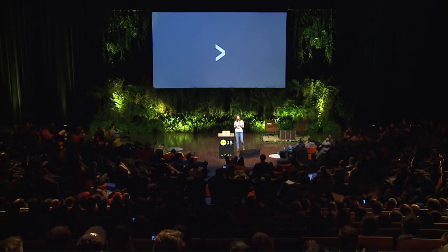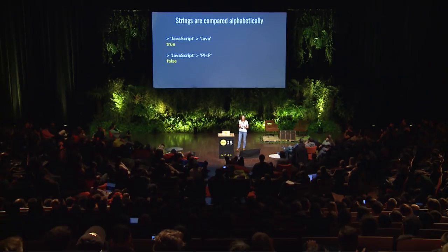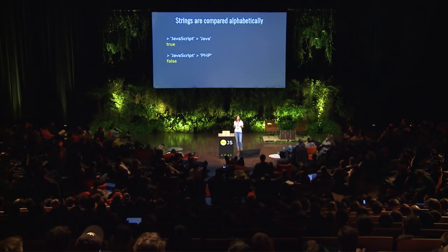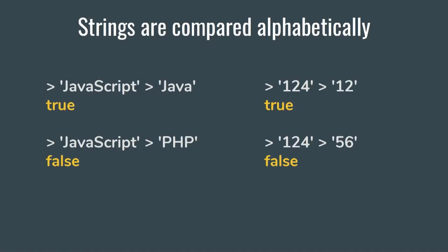So let's continue with comparison. In JavaScript, strings are compared alphabetically, which makes perfect sense. But it might lead to some traps if you start to compare strings holding numbers. In that case, you should not forget to cast at least one operand to a number — or better, do it for both of them.